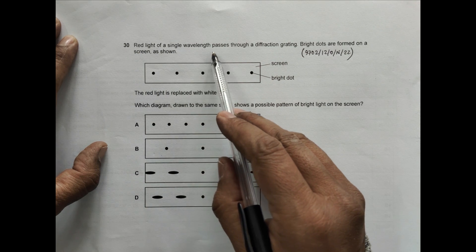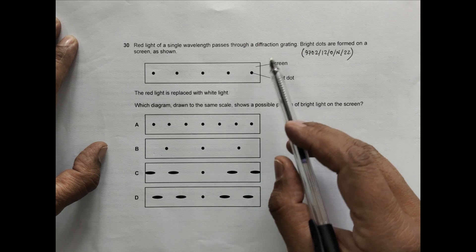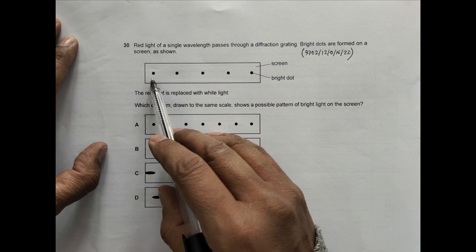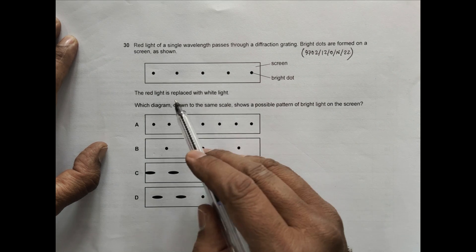Through the grating, bright dots are formed on the screen as shown. These are the bright dots, actually these are red dots.